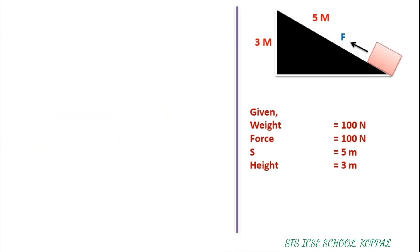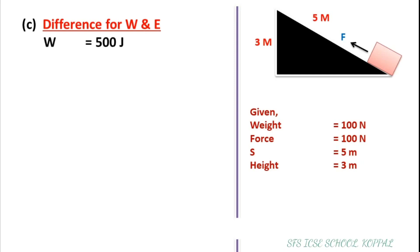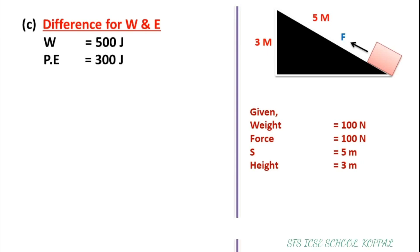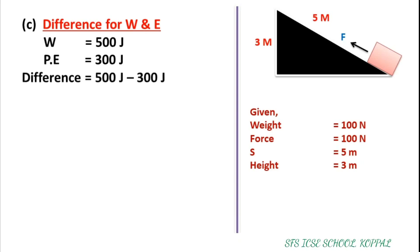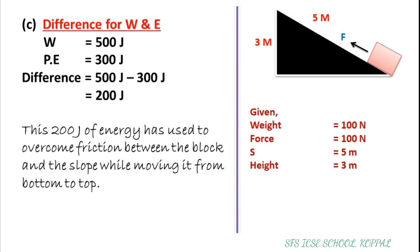Part C: account for the difference in the work done by the force and the increase in potential energy of the block. We have already found that work done equals 500 Joules and potential energy equals 300 Joules. Therefore, the difference equals 500 minus 300, which is 200 Joules. This 200 Joules of energy has been used to overcome friction between the block and the slope while moving it from bottom to the top.